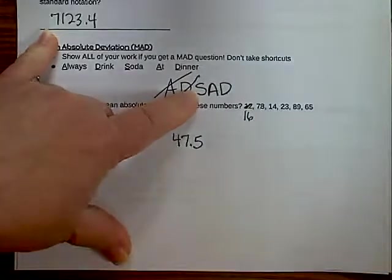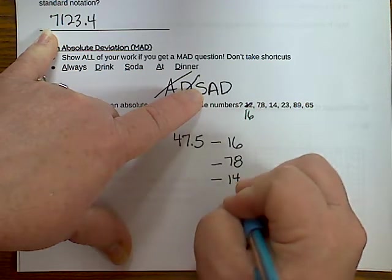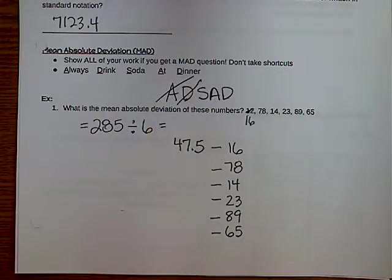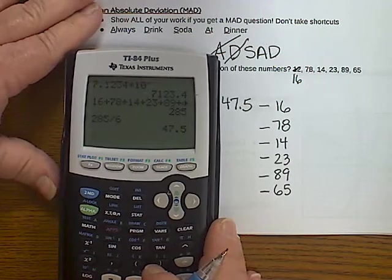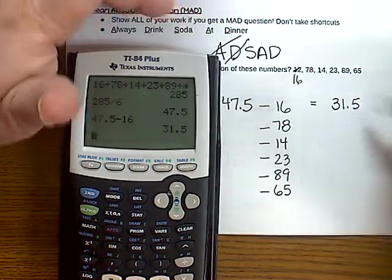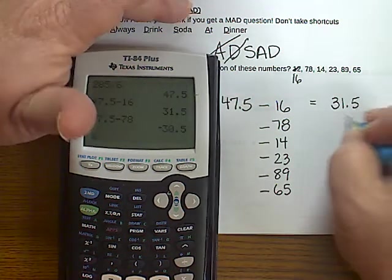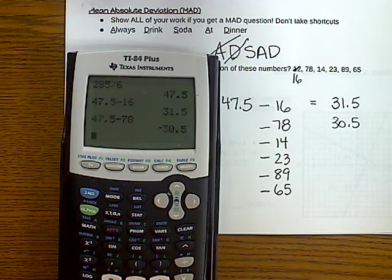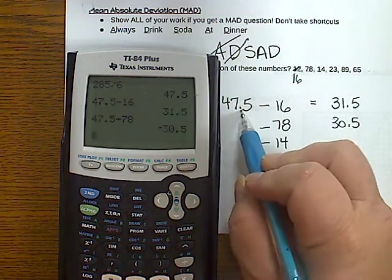The next step is S, which means subtract. So I am physically going to write this down. Subtract 16. Subtract 78. Subtract 14. Subtract 23. Subtract 89. Subtract 65. Now I'm ready for the next step of the subtraction. So I'm going to put this here so I can show you what I'm doing in my calculator and what I'm getting. 47.5 subtract 16. And I get 31.5. I'm going to make sure and keep my decimals all lined up nice. 47.5 subtract 78. And I get, now you see how I got a negative sign? We're going to ignore the negative sign and just write the number 30.5. We aren't concerned about negative or positive. We just want to know how far away each of these numbers are from the average or the mean.